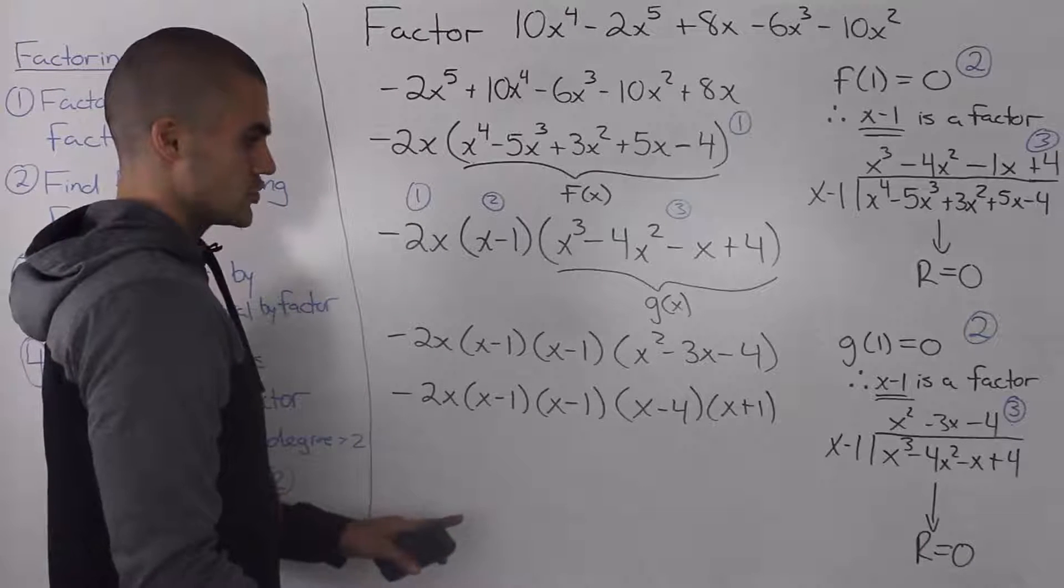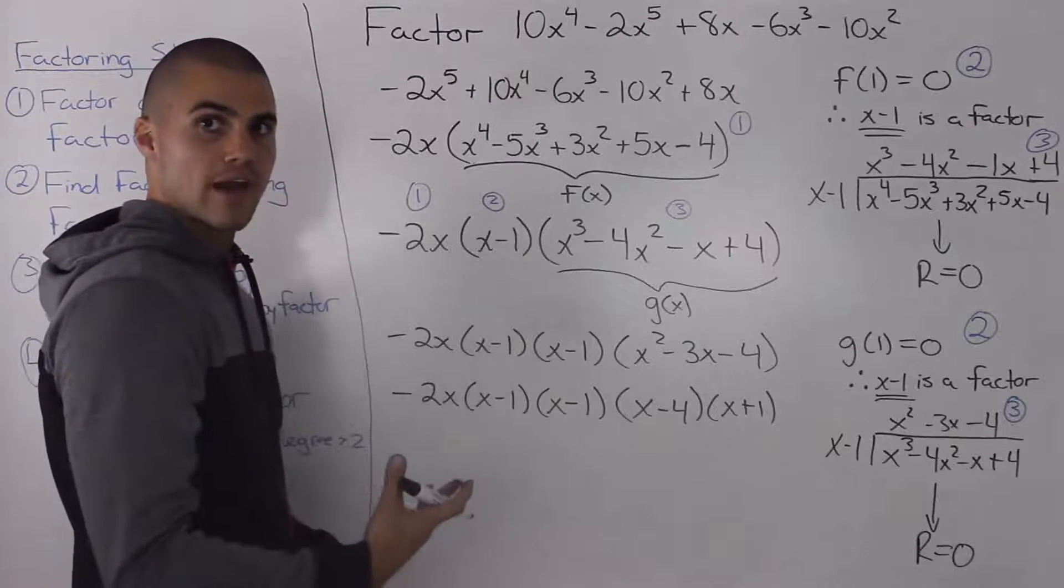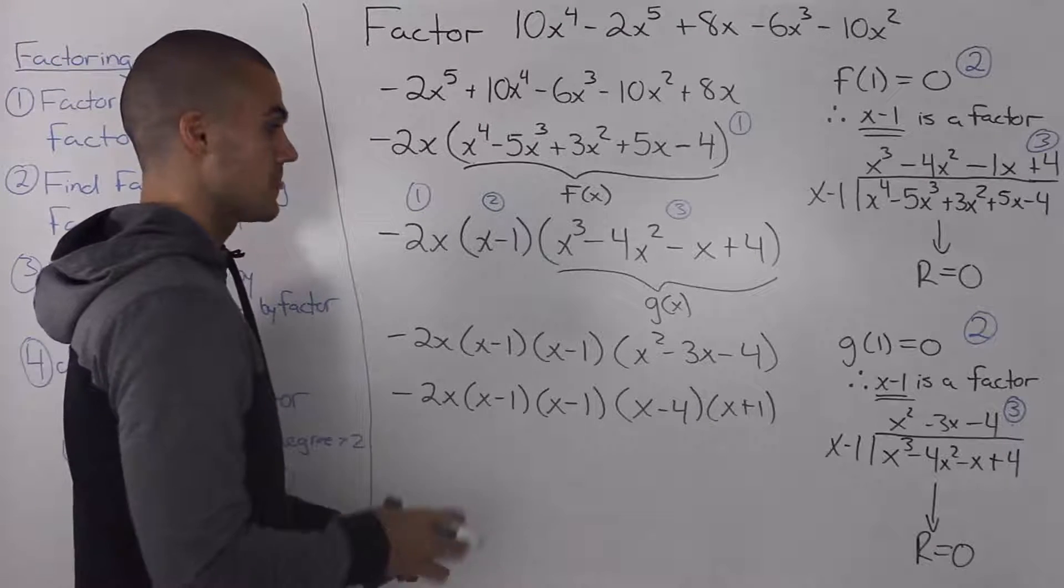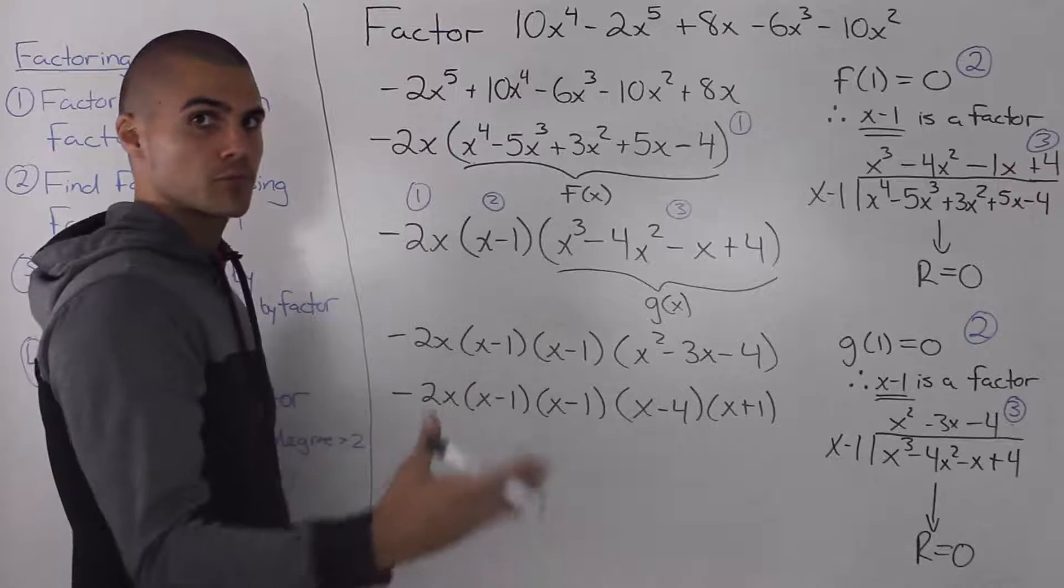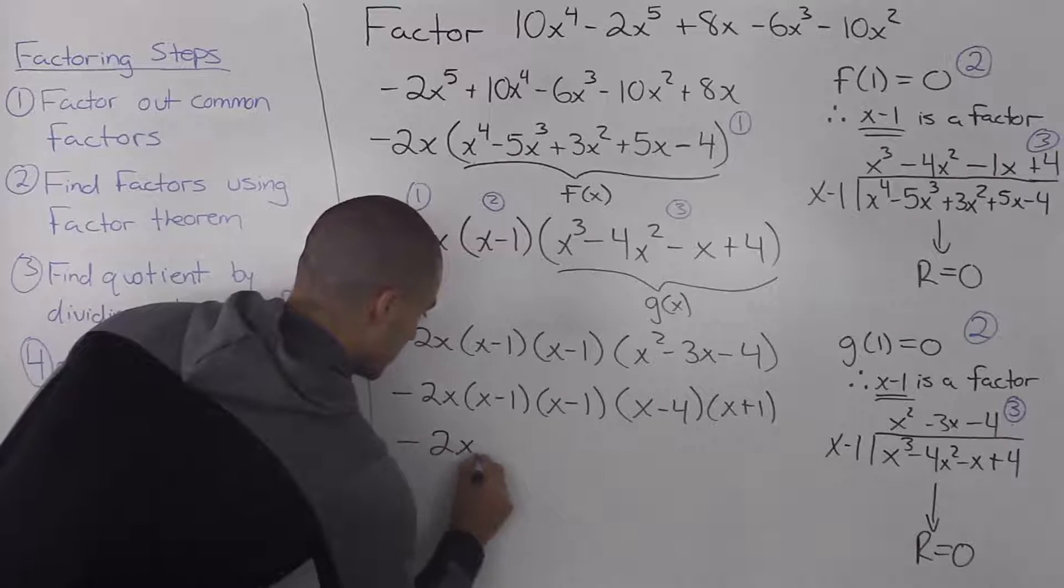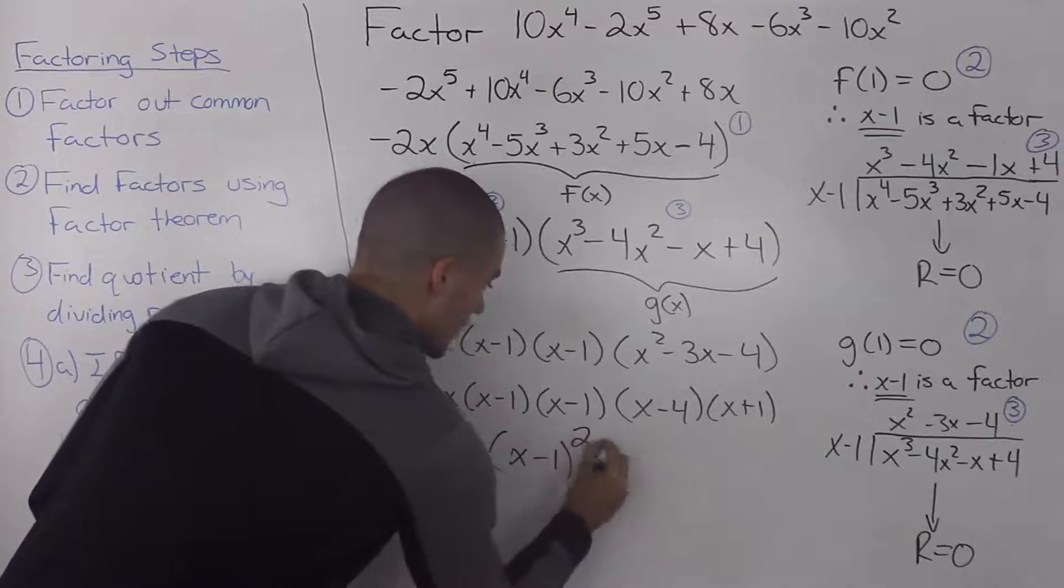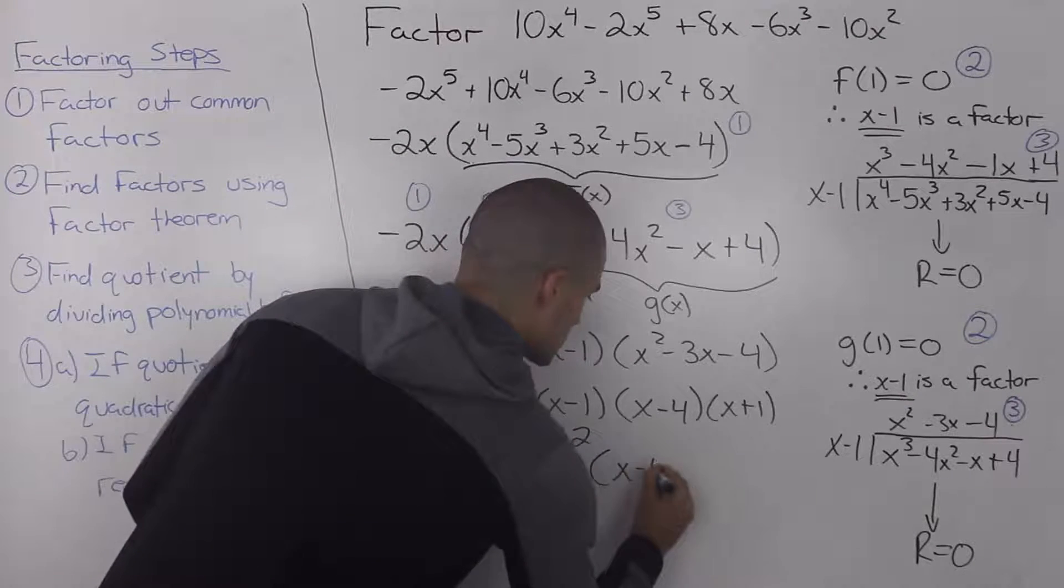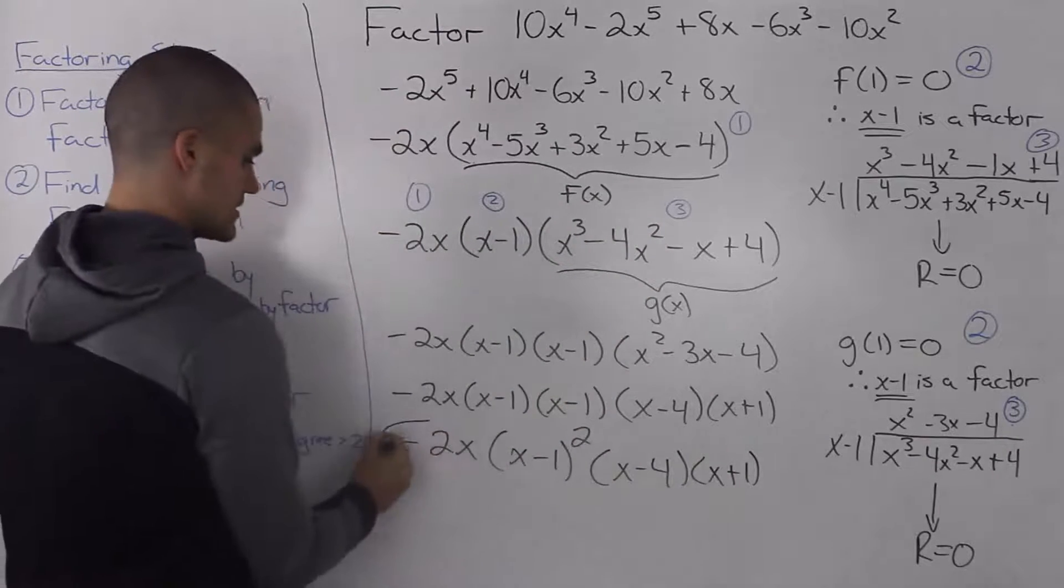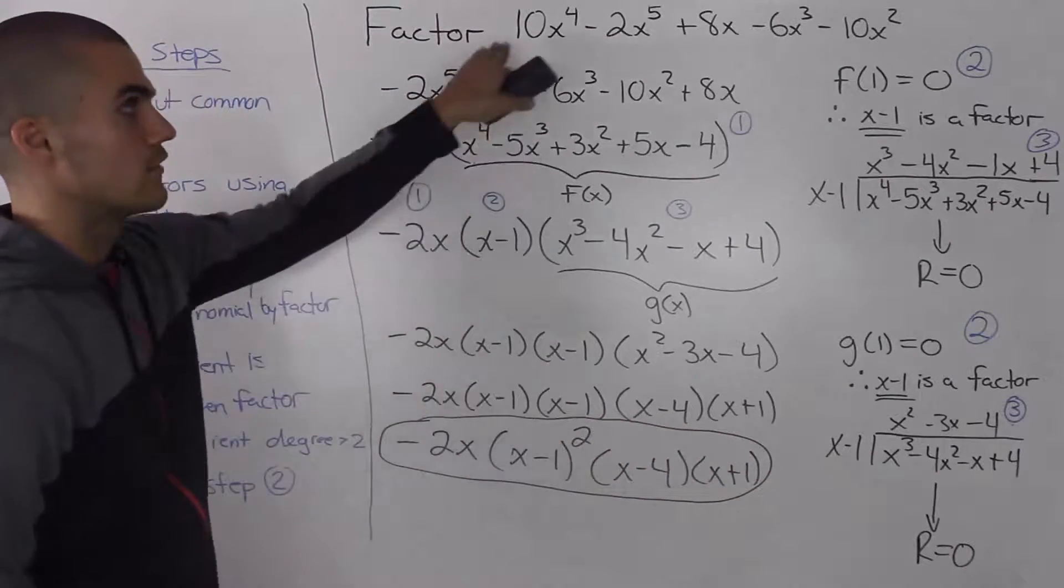Now, one thing I want you to notice about this question that's unique is that this x minus 1 is a factor that appears multiple times, it appears twice. And that's a point that I want to make with this specific example, is that you can have factors that appear multiple times. And if they appear multiple times, you can rewrite them in a much nicer way. So since this x minus 1 appeared twice, we would put a squared here. And then we'd have x minus 4 and x plus 1. And this ends up being our final answer. That's the factor form of this polynomial.